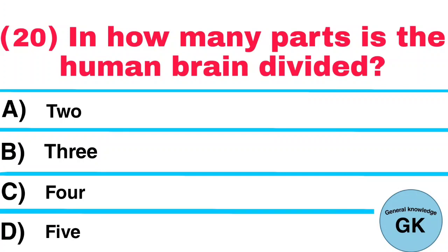Question number 20. In how many parts has the human brain divided? A. 2. B. 3. C. 4. D. 5. Answer: 3.